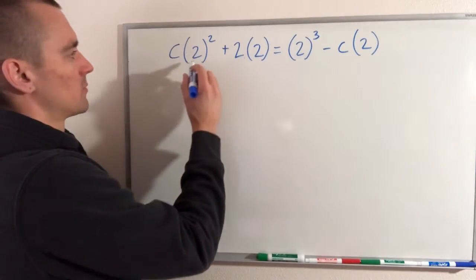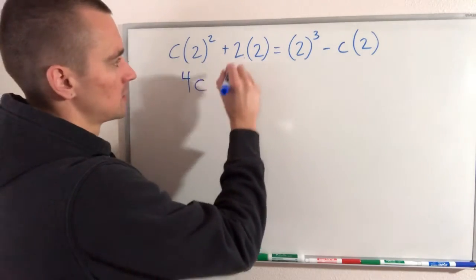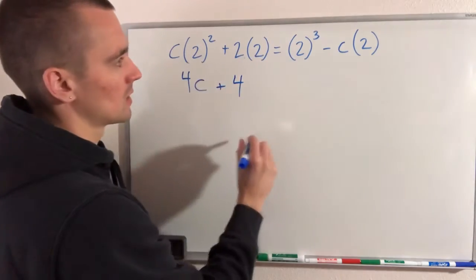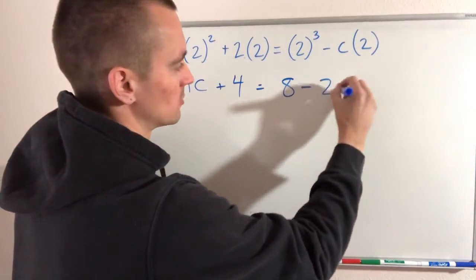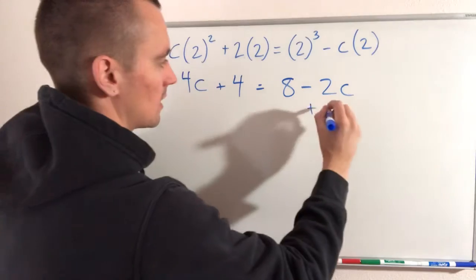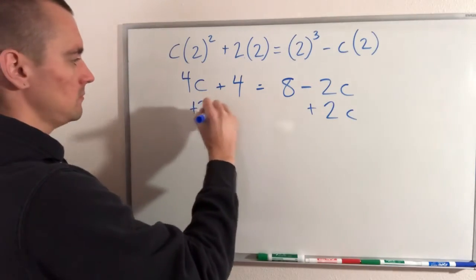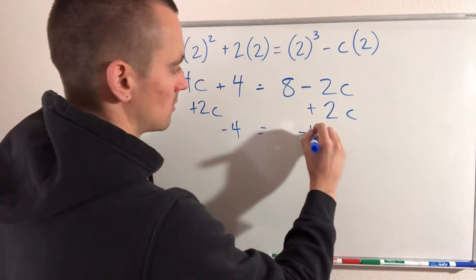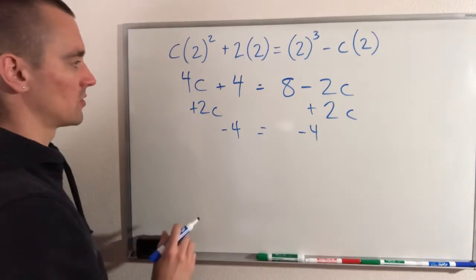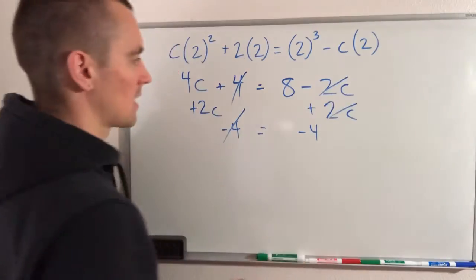So first to simplify here, 2 squared is 4. 4 times c would just be 4c. 2 times 2 is 4. 2 cubed is 8. And then minus 2c. So let's just go ahead and add our c's over to the left. Subtract this 4 over. Whatever we do to one side, we have to do to the other. So that will cancel there. That will cancel with that.